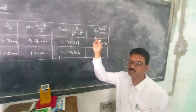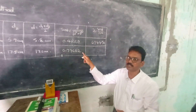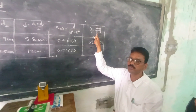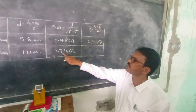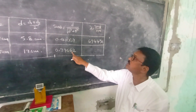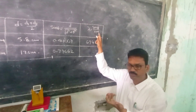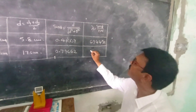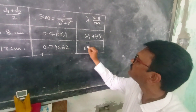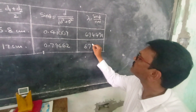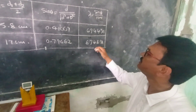For the second order, m equals 2. Substituting sin theta equal to 0.7962, m equal to 2, and capital N equal to 15,000 divided by 2.54, we get lambda equal to 6746 angstrom units.